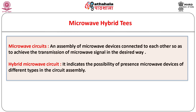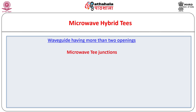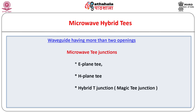The term hybrid microwave circuit indicates the possibility of presence of microwave devices of different types in the circuit assembly. Let us discuss about some important devices wherein waveguides have more than two openings. Obviously such systems or devices can be thought as if several waveguides are connected together. In general the simplest of such assemblies is known as a T-junction. Three types — namely E-plane T, H-plane T and hybrid T-junction — are of direct concern to us. Hybrid T-junction is also called as a magic T-junction due to its special action.